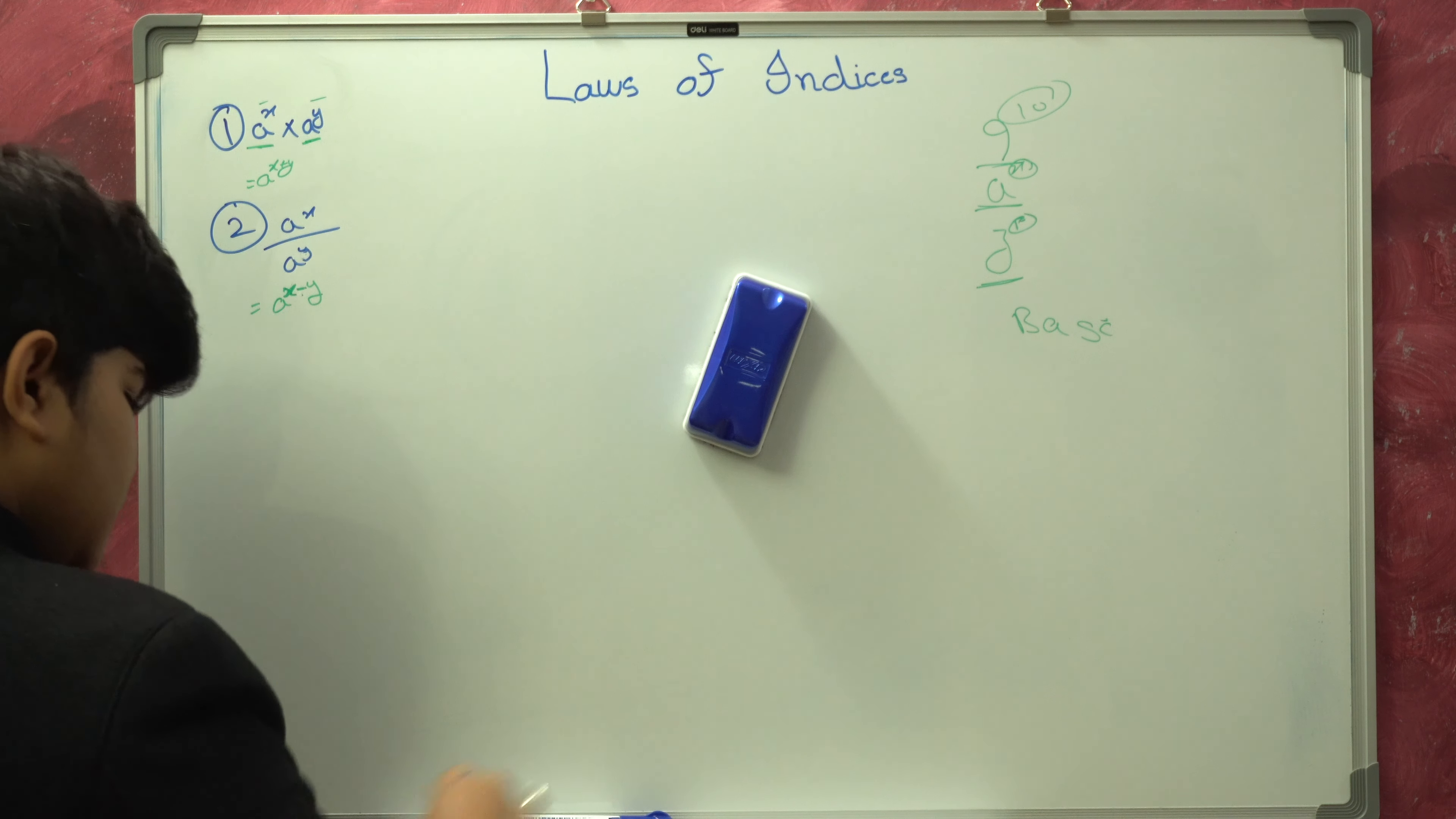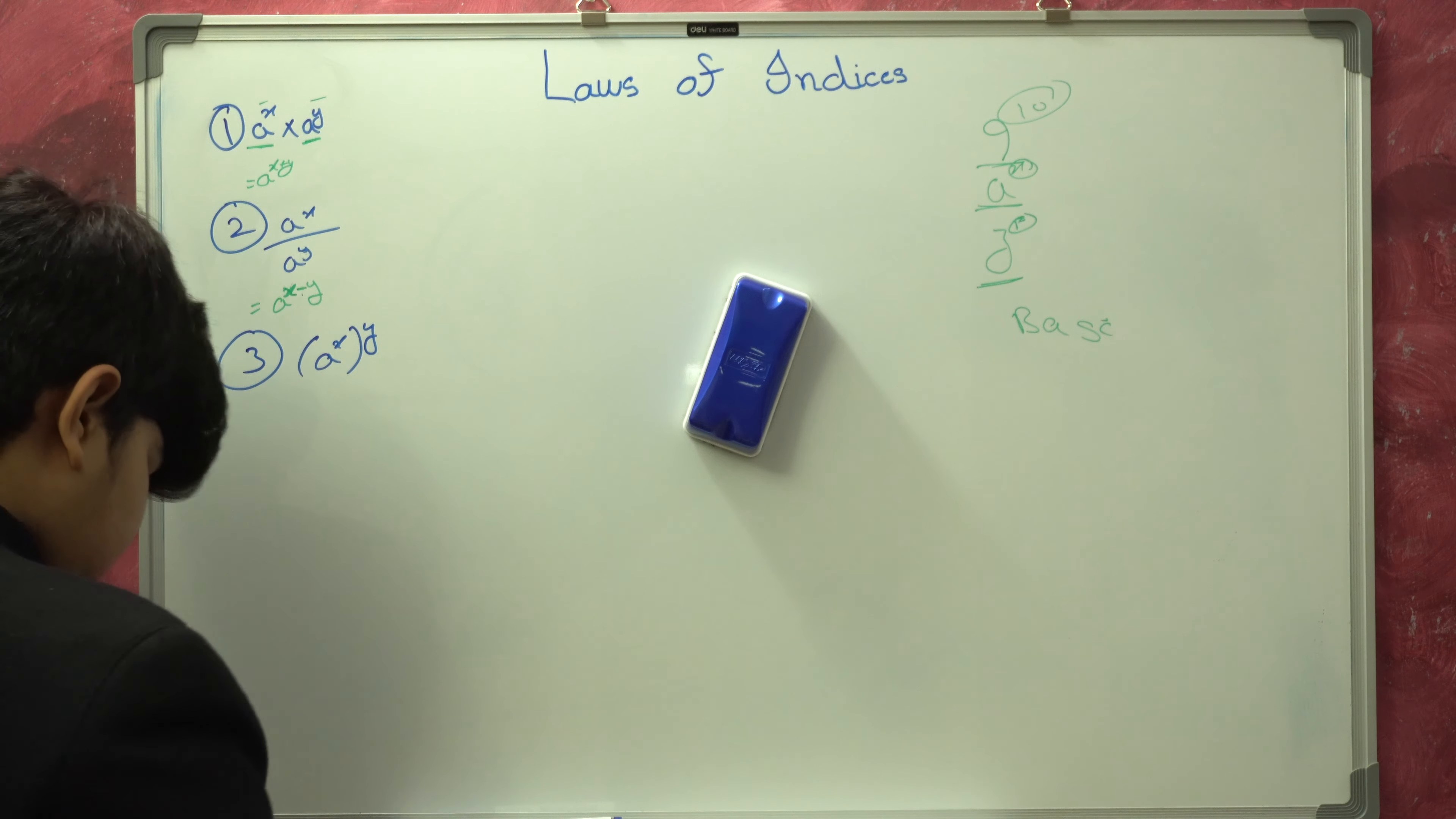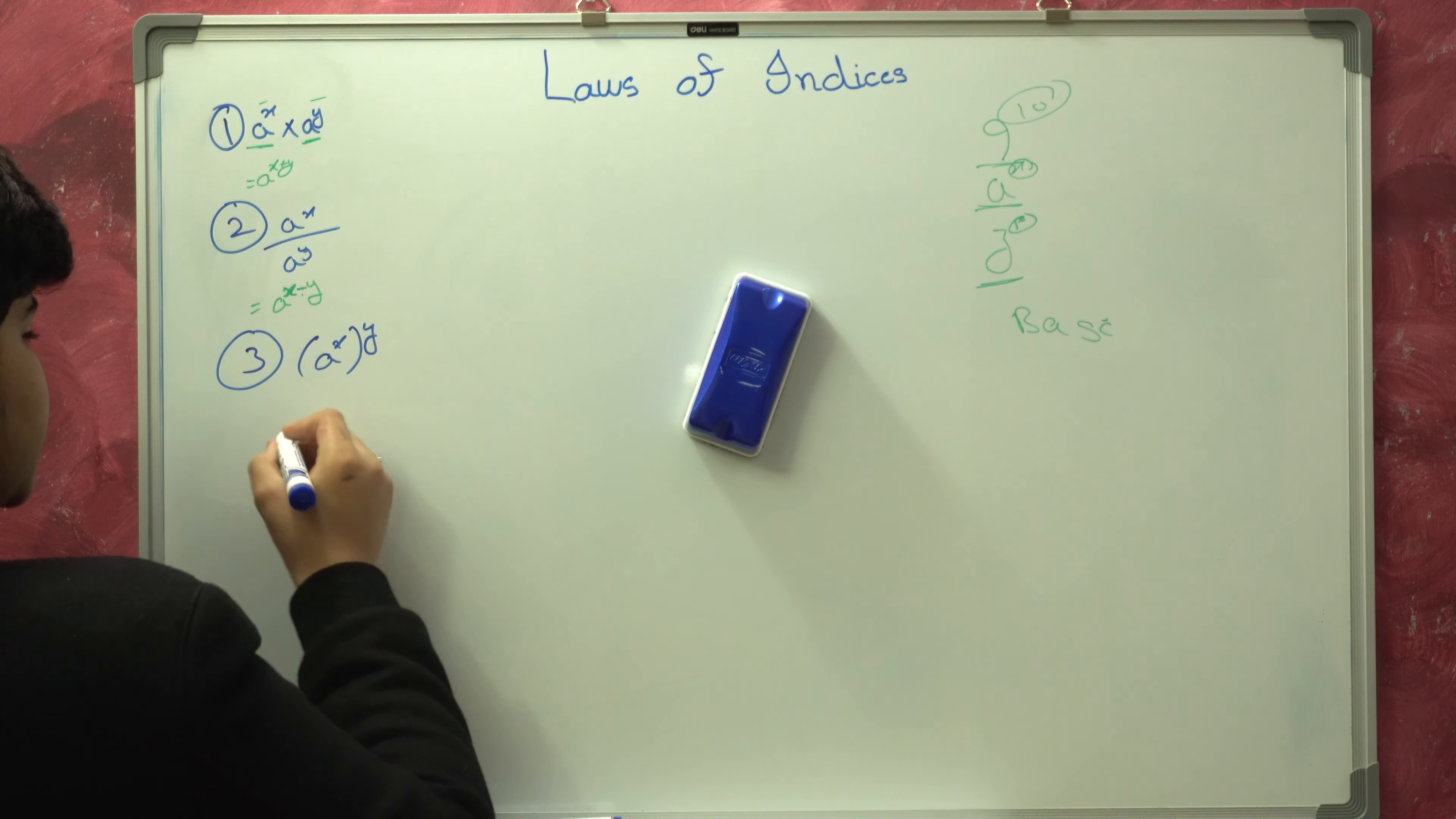This is what the second law states. The third law states if there is a base with a power inside a bracket and it also has a power outside the bracket.